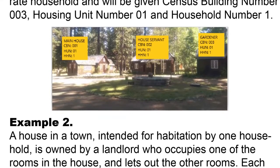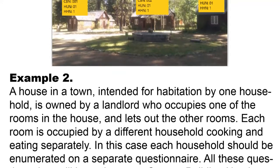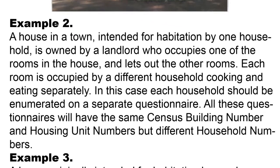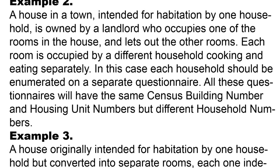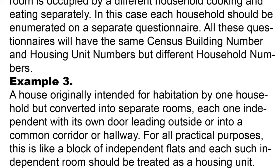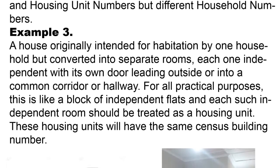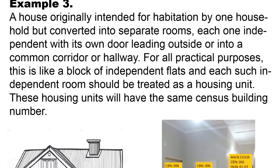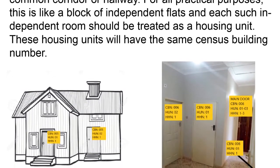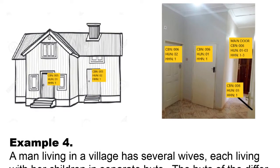Example 2: A house in a town intended for one household is owned by a landlord who occupies one room and lets out the others. Each room is occupied by a different household cooking and eating separately. Each household should be enumerated on a separate questionnaire. All questionnaires will have the same census building number and housing unit numbers, but different household numbers. Example 3: A house originally intended for one household but converted into separate rooms, each independent with its own door leading outside or into a common corridor or hallway. For all practical purposes this is like a block of independent flats, and each such room should be treated as a housing unit with the same census building number.